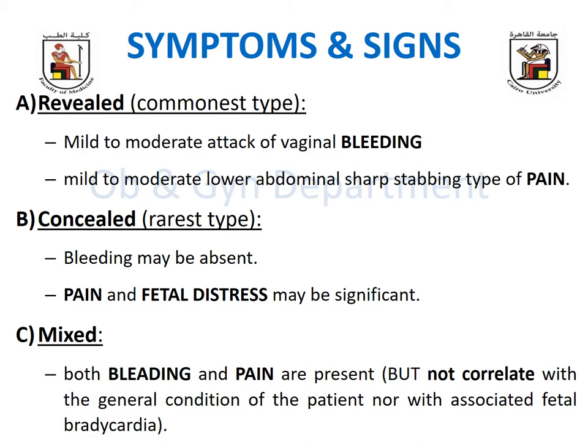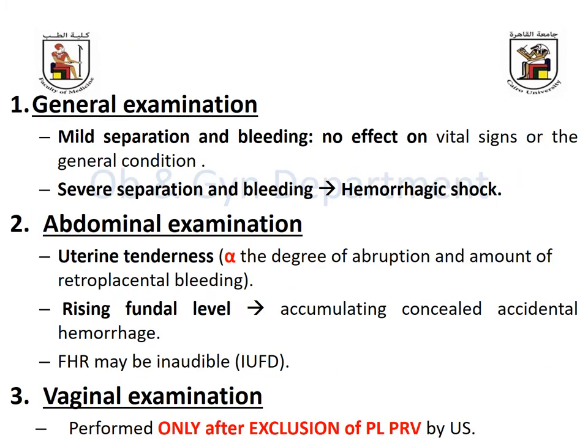To summarize: in placenta previa there are two presentations — either no symptoms at all or painless recurrent bleeding. In accidental hemorrhage there are also two symptoms — bleeding and pain — but pain is the hallmark. In the concealed type you may have no bleeding at all, but in all types there must be pain due to internal hemorrhage and placental separation.